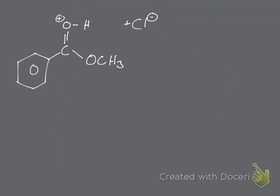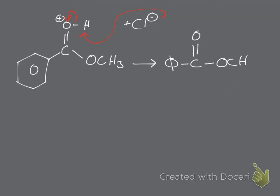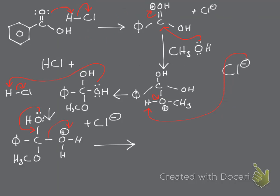The next step: Cl⁻ is going to come and attack the hydrogen on the positively charged oxygen. That causes the electrons to jump onto the oxygen and neutralize the charge. We end up with our ester: phi (benzene), carbonyl carbon, and OCH₃. We also have HCl back in solution and water in solution from the earlier step when water left.